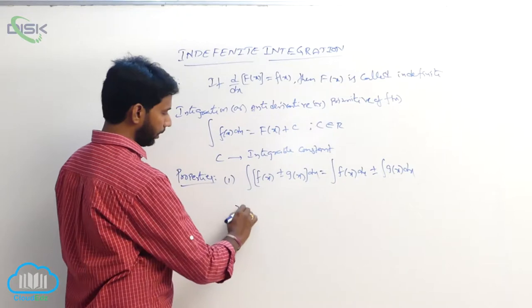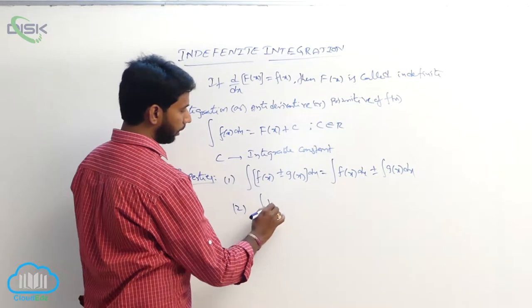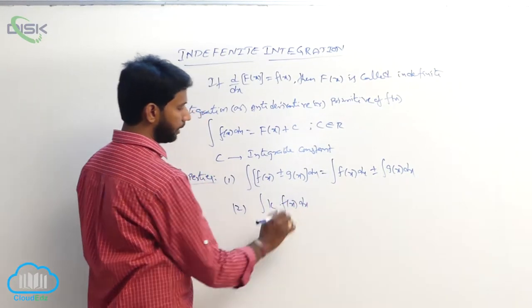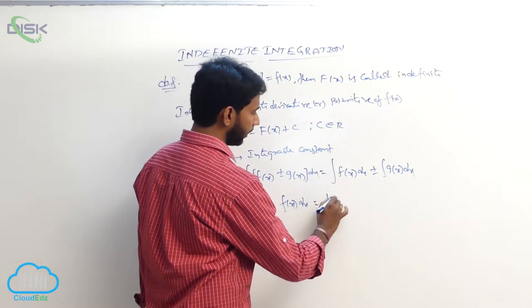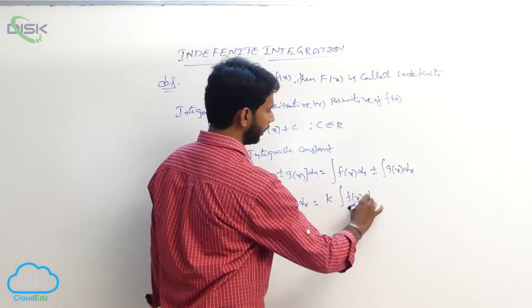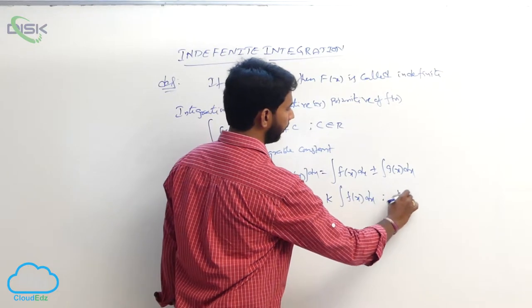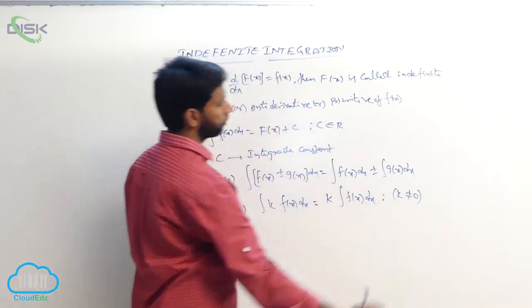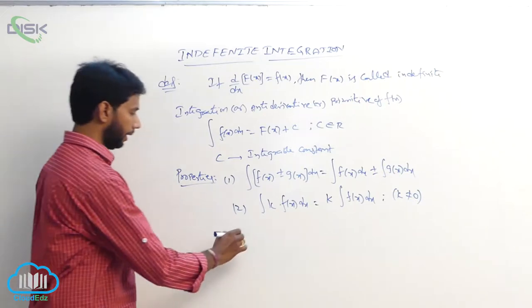The next property is: integral of k times f of x dx, where k is a non-zero constant, equals k times the integral of f of x dx.